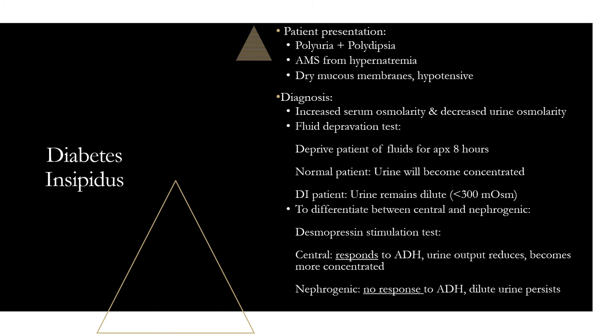To differentiate central from nephrogenic DI, give the patient desmopressin — a synthetic form of ADH. In central DI, since the pituitary isn't producing ADH, giving desmopressin brings everything back to normal: urine output reduces and becomes more concentrated. In nephrogenic DI, since the kidneys don't respond to ADH, giving desmopressin changes nothing — it remains the same. This is how you differentiate: response to desmopressin means central; no response means nephrogenic.